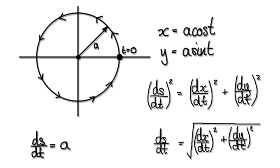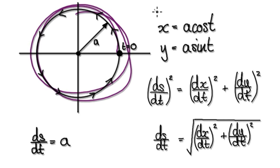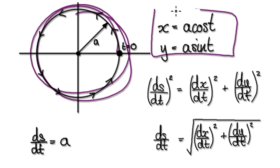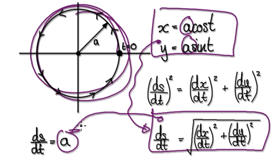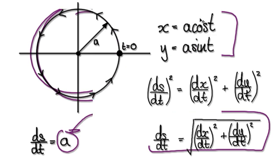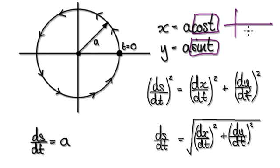In the previous video, we've seen that when a particle is traveling around in circles, the parametric equations will be given by this, and the speed will be given by this. So when you have 'a' here and 'a' here, the speed will be 'a', because the period here would be 2pi.